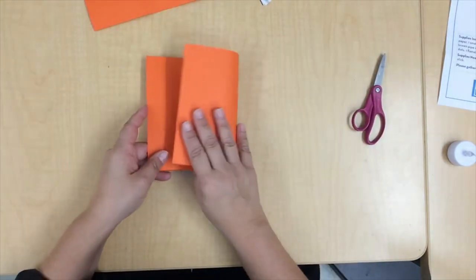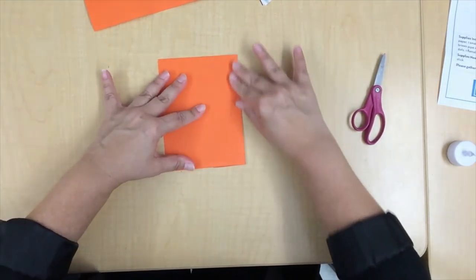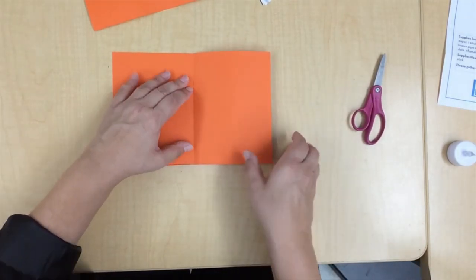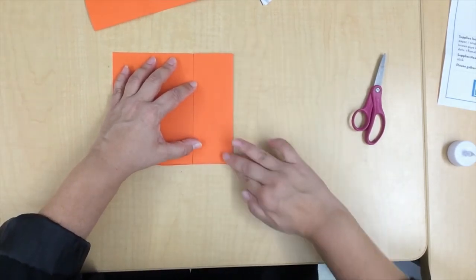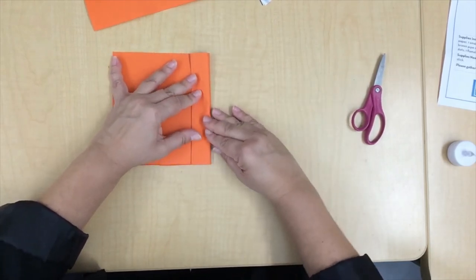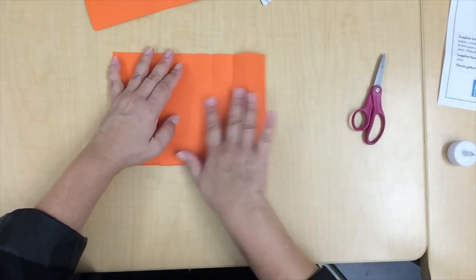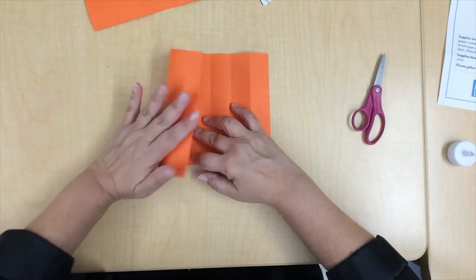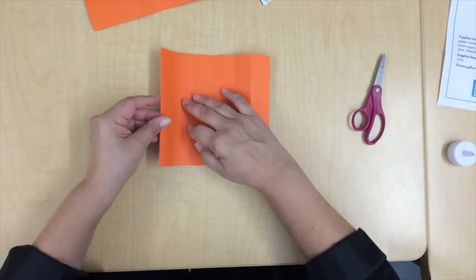Next we will fold in half. Open up your paper and fold this edge to the center line that you just made, and now fold this line to the center line that you just made. You can open up that side. Now this is the center line still. Fold this edge to the center line and fold this edge to the center line.